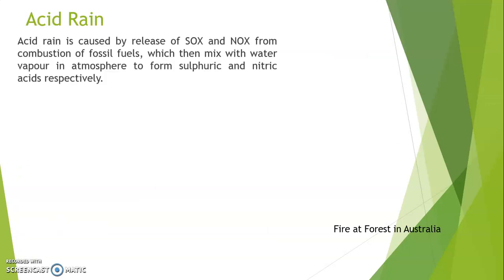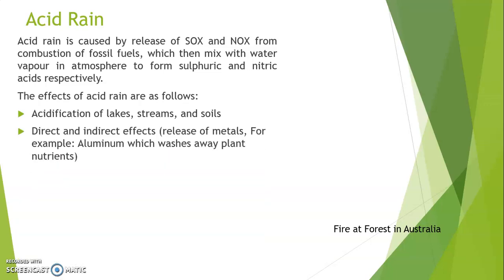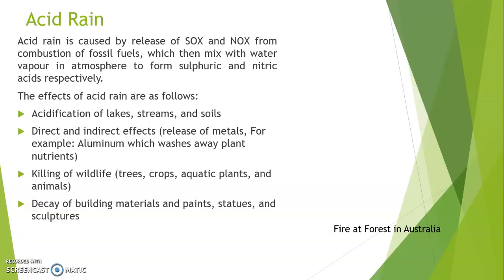Acid rain is caused by release of sulfur oxides and nitrogen oxides from combustion of fossil fuels, which mix with water vapor in the atmosphere to form sulfuric and nitric acids respectively. The effects include acidification of lakes, streams and soil, release of metals like aluminum which washes away plant nutrients, killing of wildlife, trees, crops, aquatic plants and animals, and decay of buildings, materials, paints, statues and sculptures.